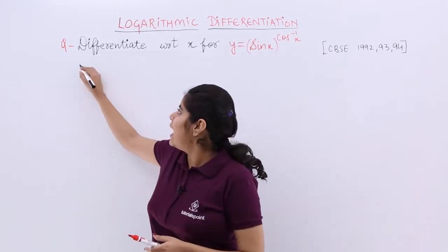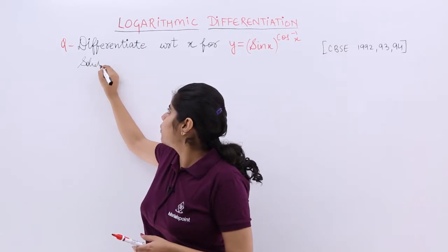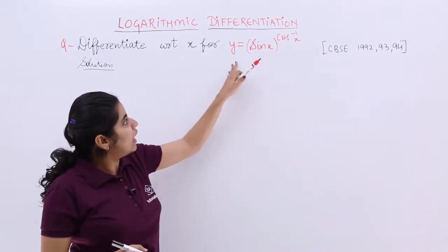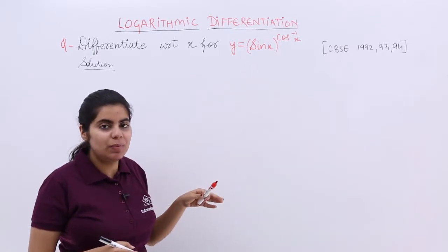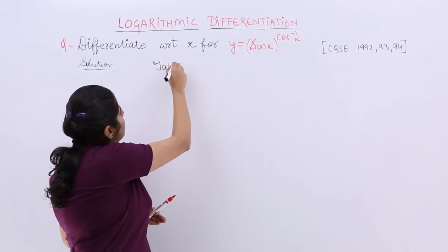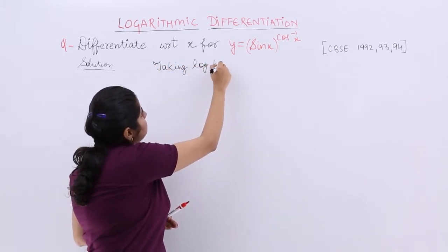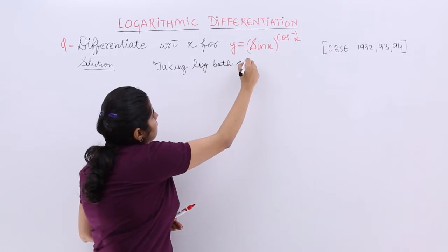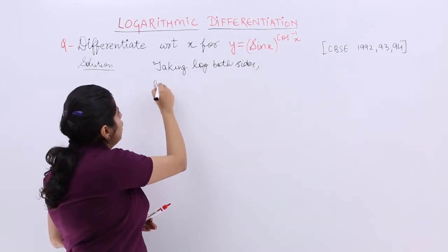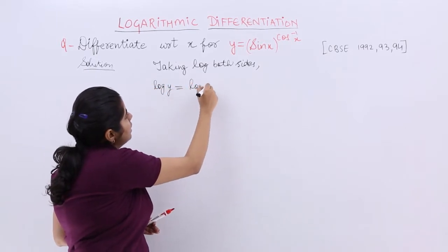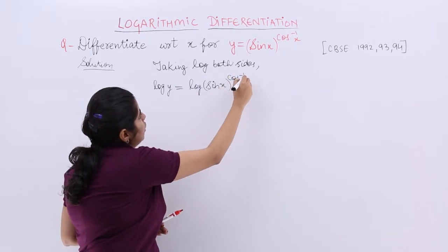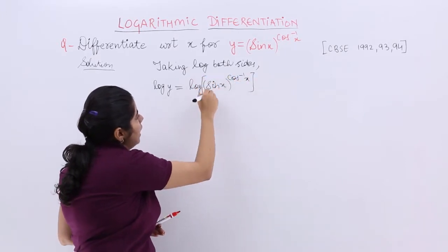I write the heading as solution and let's start the question and solve it. Now it is y raised to the power, y is equal to sin x raised to the power cos inverse x. Again, the same thing like the previous question, taking log both sides. So it becomes log y is equal to log sin x raised to the power cos inverse x.